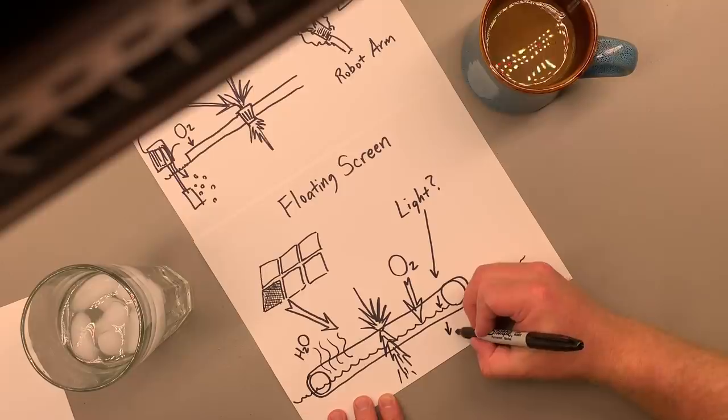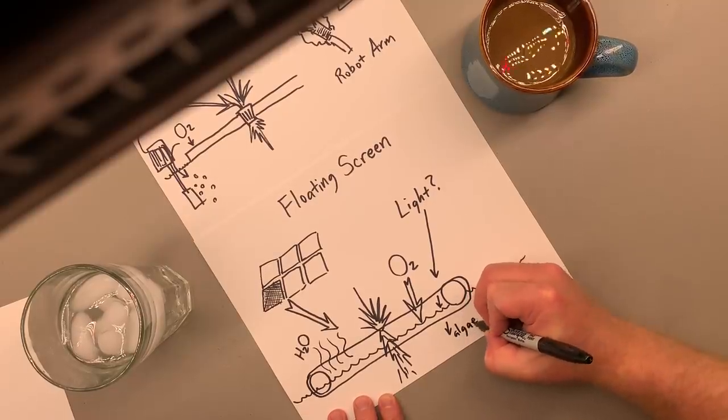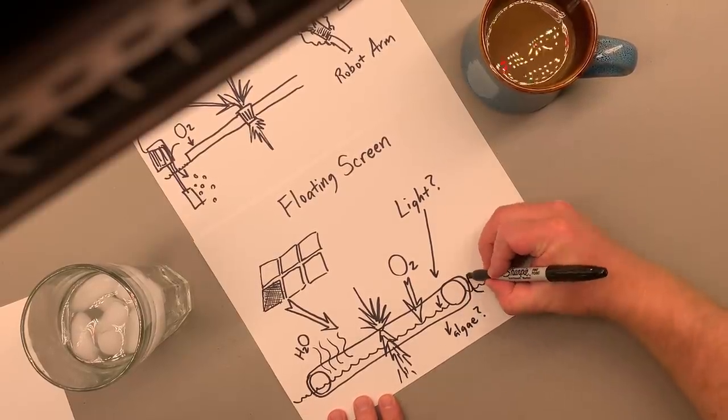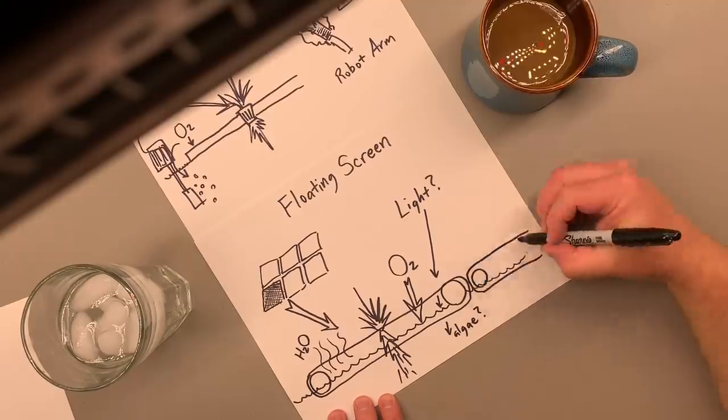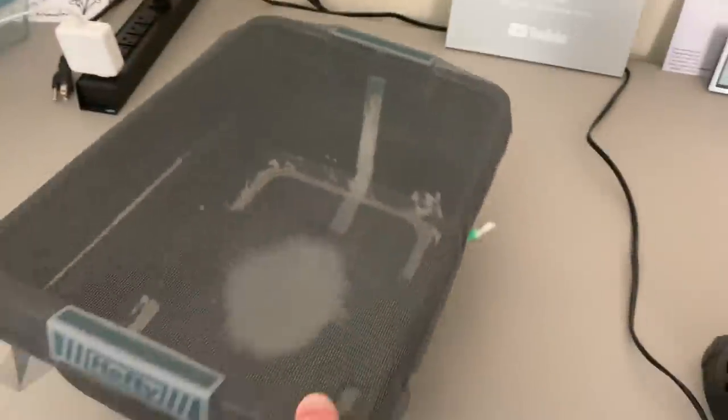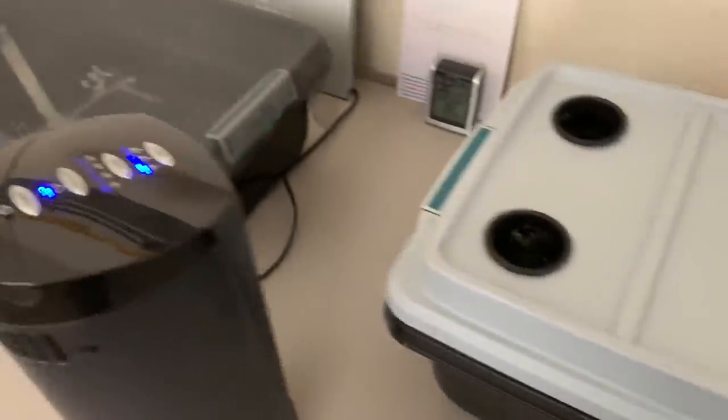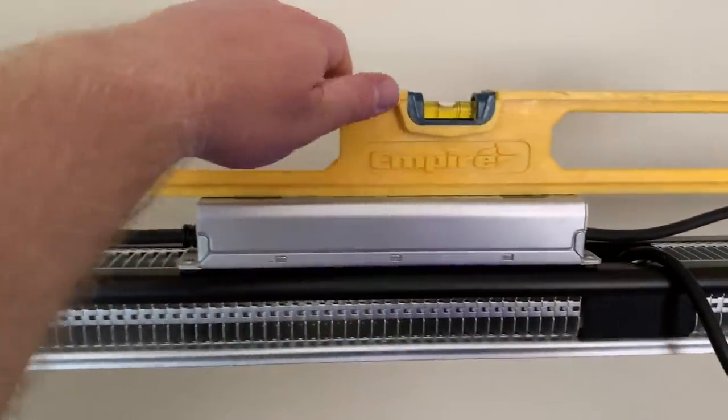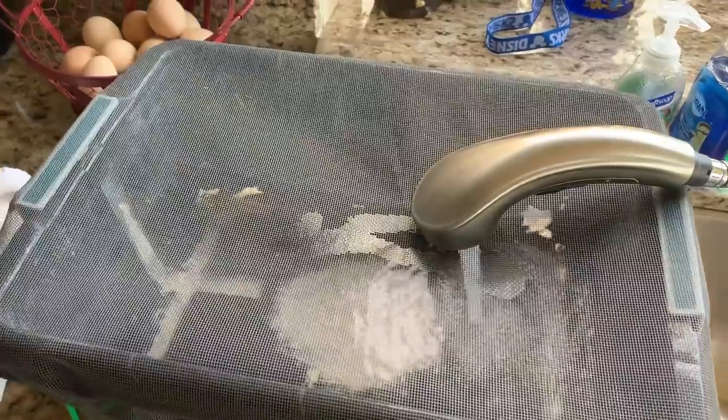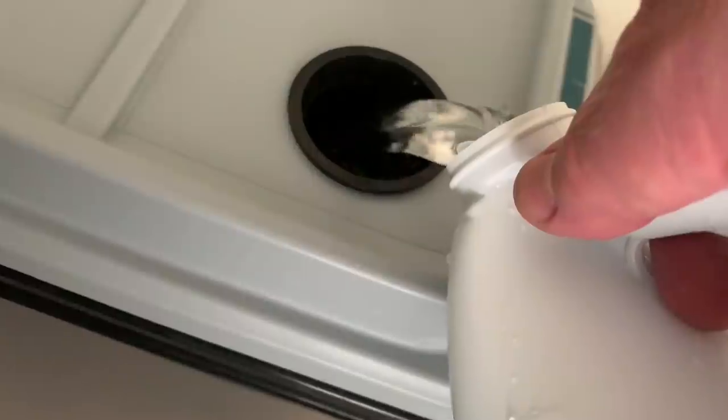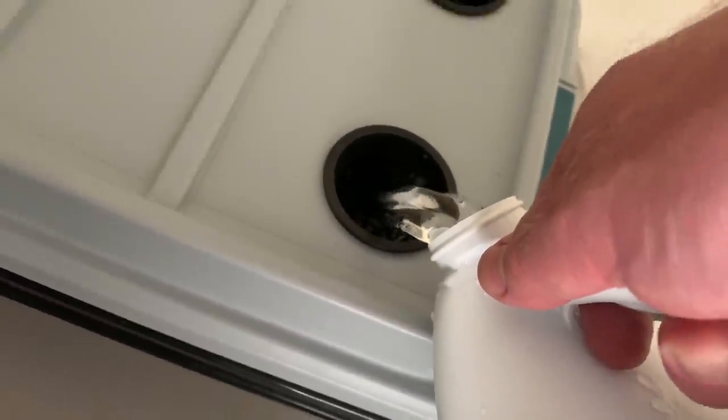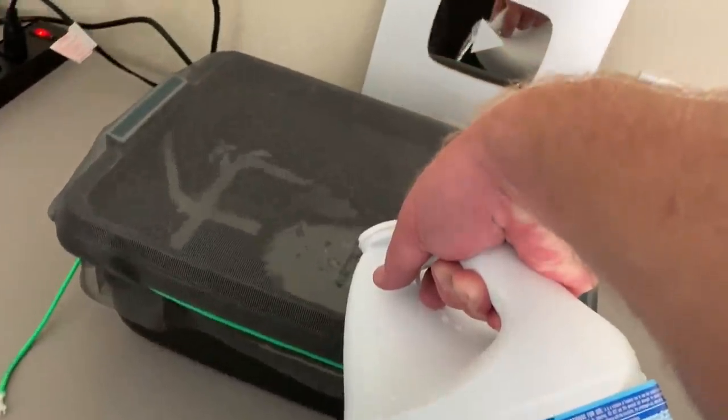Algae might be a problem since the water is exposed to the light, but what if this screen is made out of shade cloth? This screen is fiberglass. It's the same thing people put on their windows. The jug is just a recycled container.